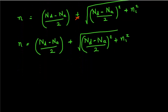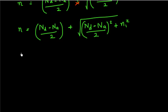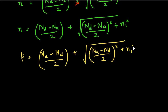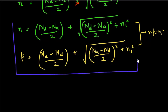I can do the same exercise for the number of holes. The formula looks the same but with Nd and Na swapped: P equals (Na minus Nd)/2 plus the square root of ((Na minus Nd)/2) squared plus ni squared. You can further verify that multiplying these two expressions gives NP equals ni squared, which is a checkpoint confirming these formulas are correct.